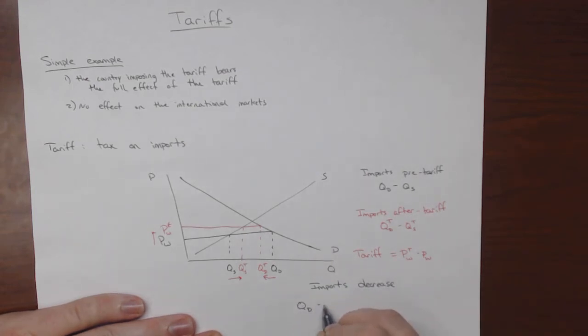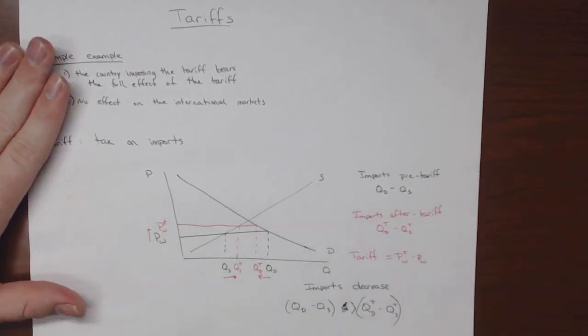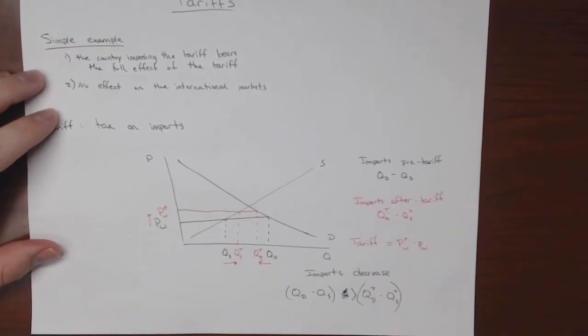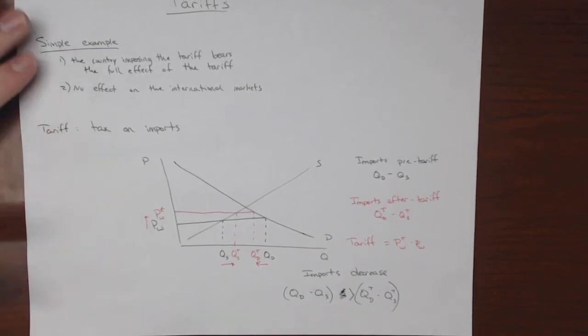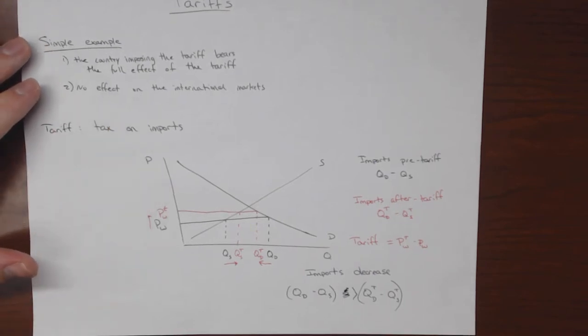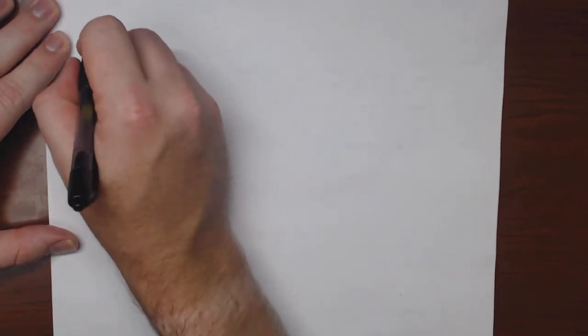Or more formally, QD minus QS is bigger than QDT minus QST. So there's a simple graph or way to view a tariff with these assumptions here. This is a 100% accurate representation. Now I'm going to flip over and we're going to redraw this a little bit bigger so that we can see it a little bit better.